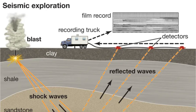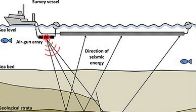Seismic surveys on land may use a thumper truck, which has a vibrating pad that pounds the ground to create seismic waves in the underlying rock. Sometimes small amounts of explosives are used. Seismic surveys conducted in the ocean use blasts of sound that create sonic waves to explore the geology beneath the ocean floor.